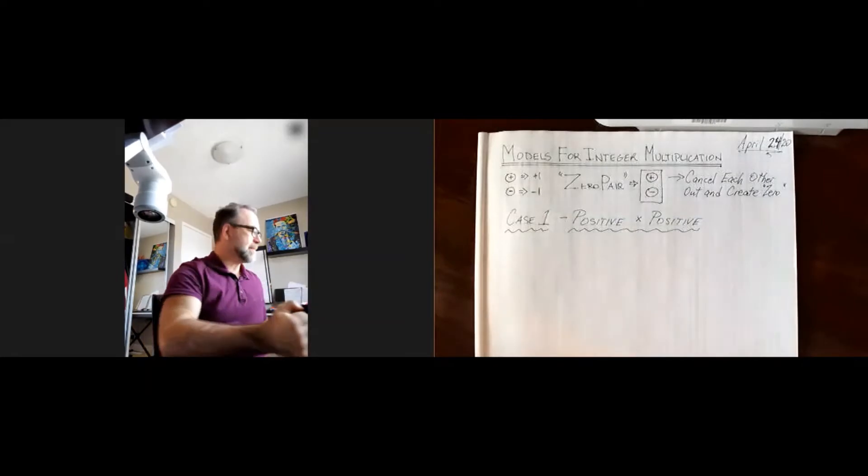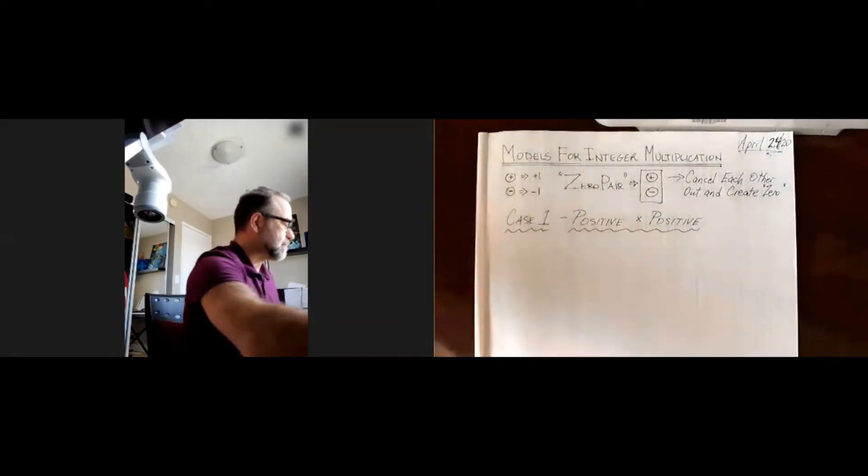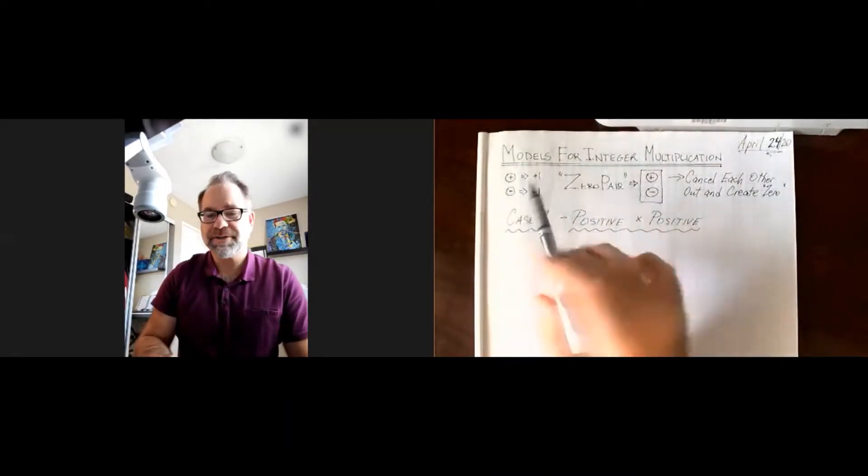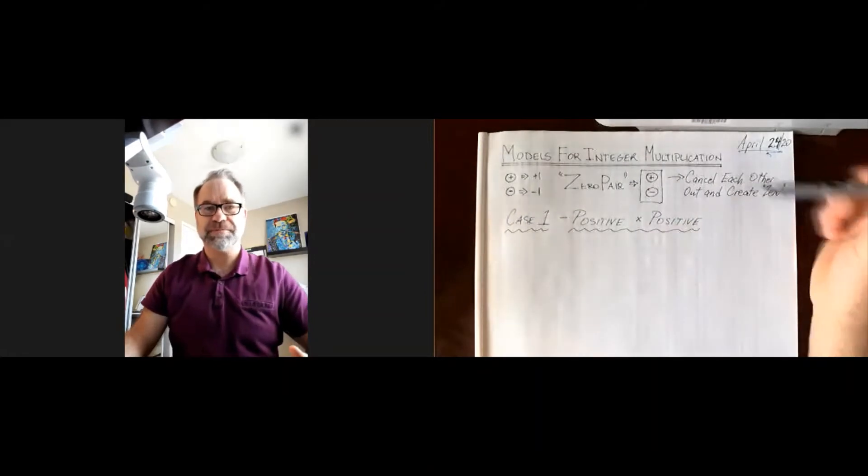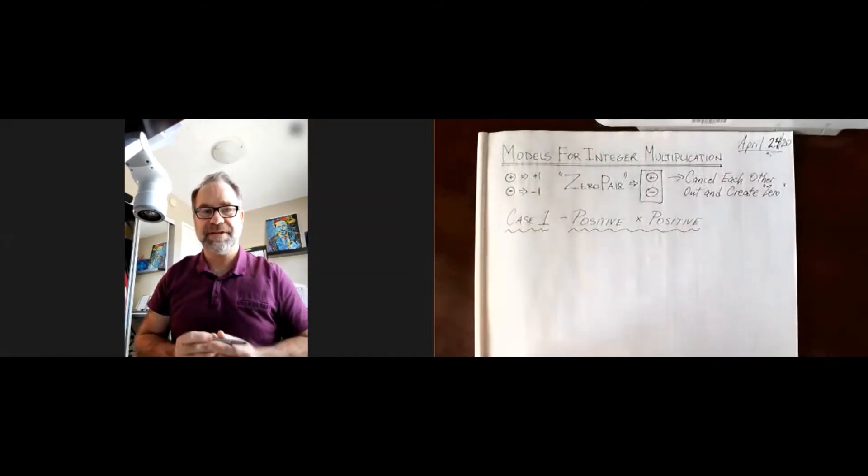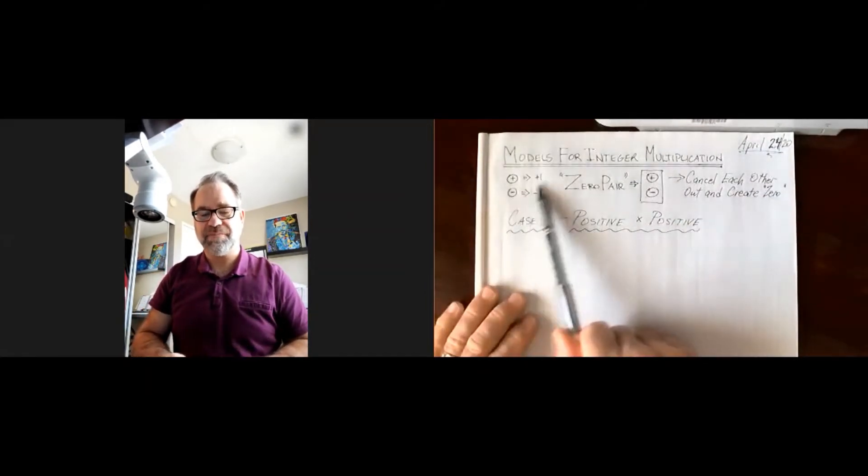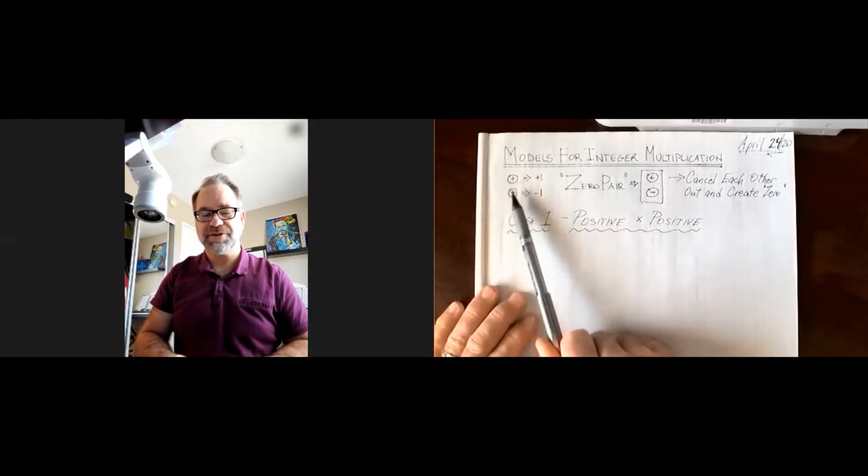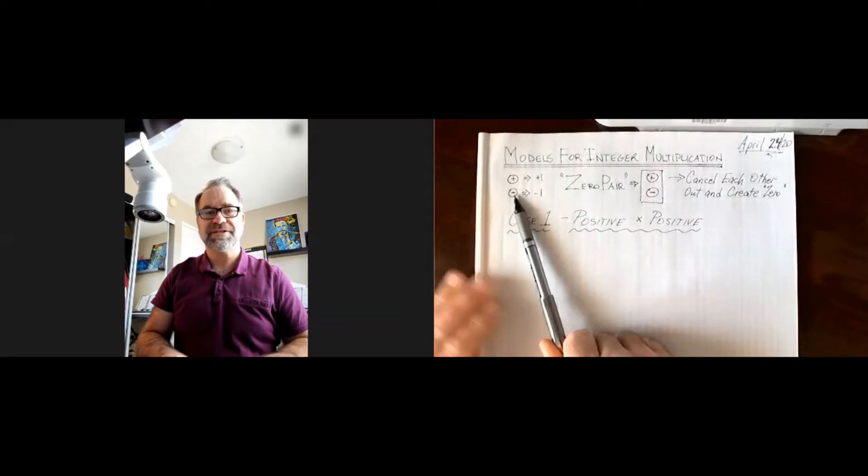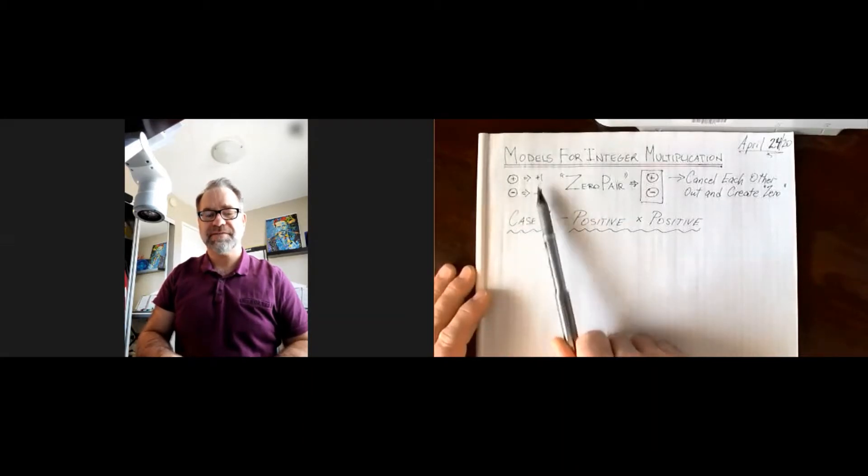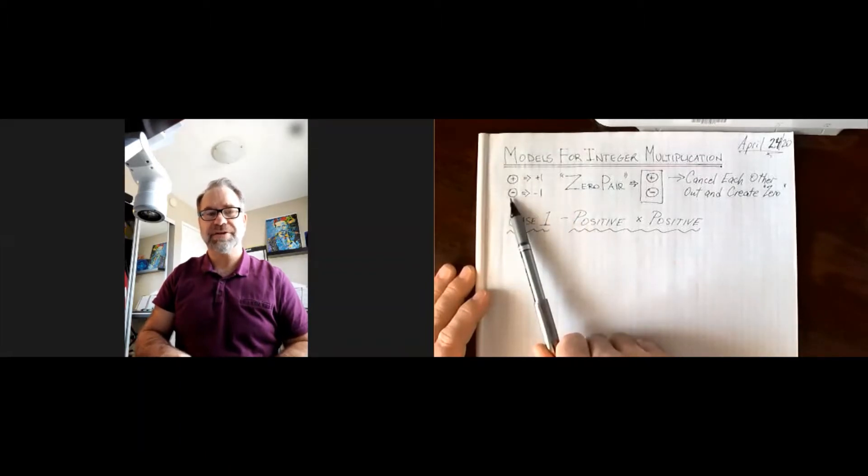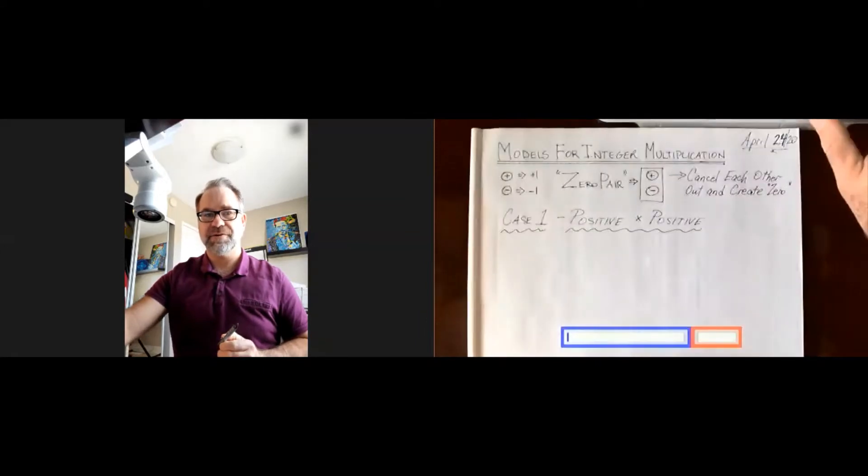So we're looking at models for integer multiplication. And there are a couple things that we need to review first. Today I'm going to be using circles with positive and circles with negative signs in them to stand for positive 1 and negative 1.